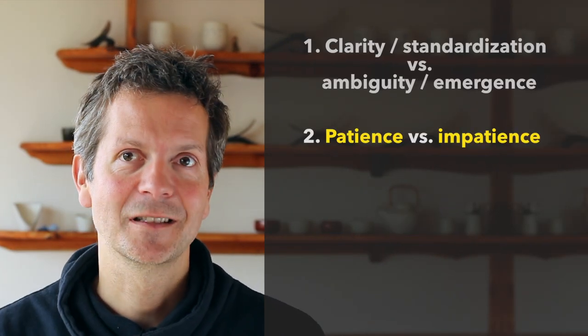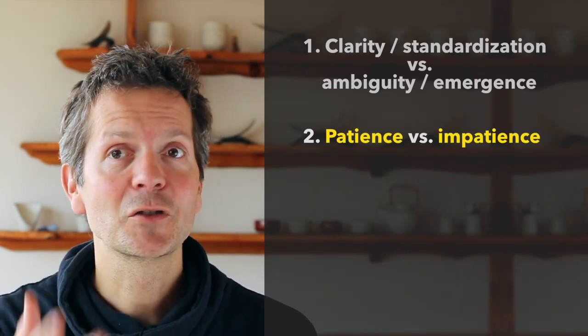The second axis is this axis of patience versus impatience. And again, you might have a strong preference.